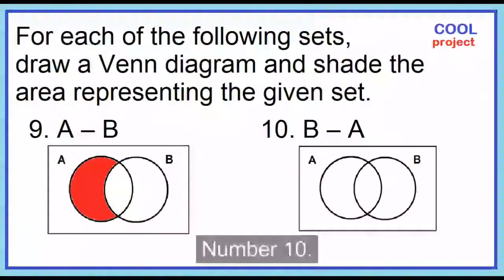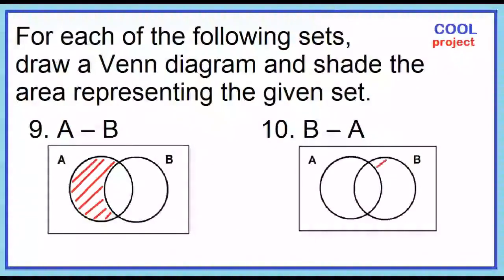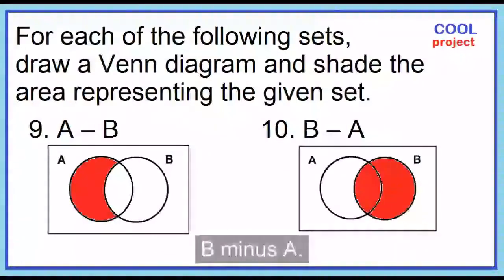Number 10. B minus A. Shade circle B excluding circle A.